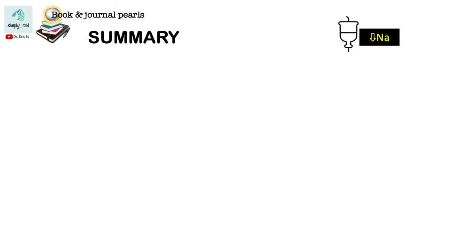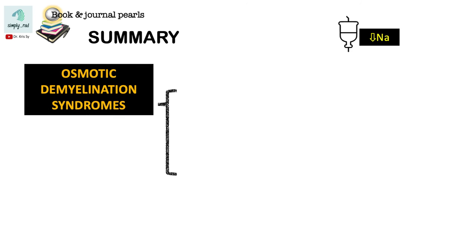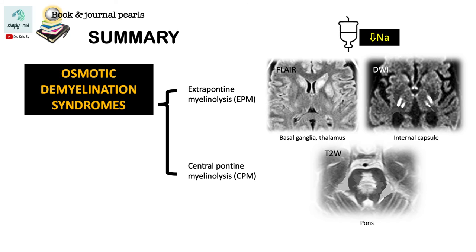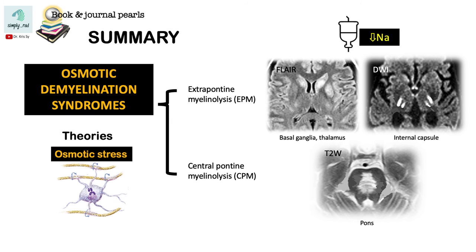In summary, osmotic demyelination can be seen in the pons or outside the pons. Several theories try to explain this phenomenon, and the most accepted one is increased osmotic stress leading to oligodendrocyte injury and loss of myelin. A second theory, to explain why deep gray matter nuclei can also be involved, is due to the hypoperfusion and hypoxia brought about by brain edema. That ends our discussion. I hope this short lecture was helpful to all of you. Thank you for listening and see you on the next one.